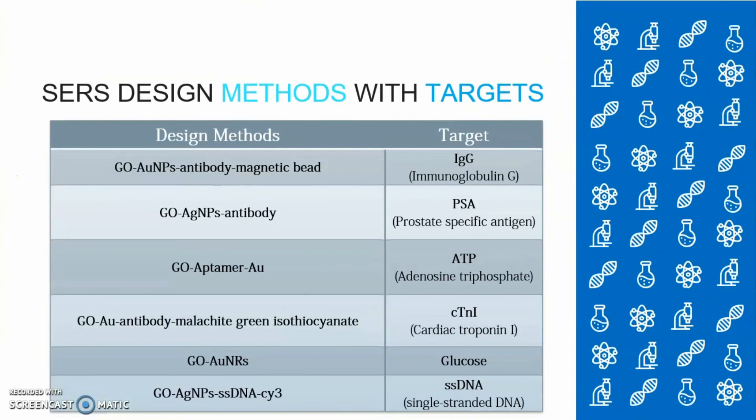Through these search design methods, the graphene biosensor can be used to detect such as protein, glucose, prostate specific antigen, or even single-stranded DNA.